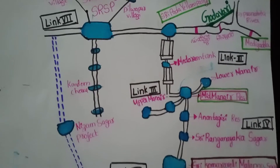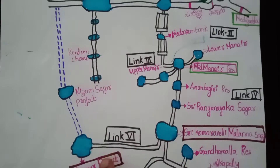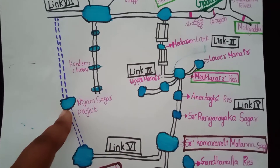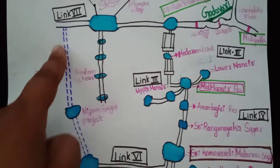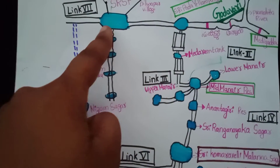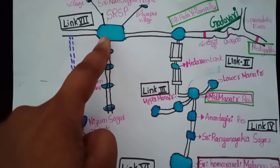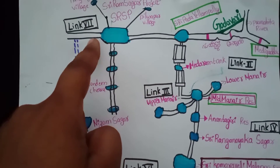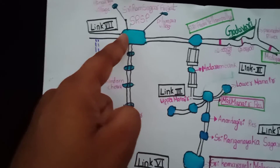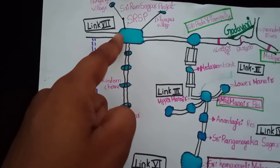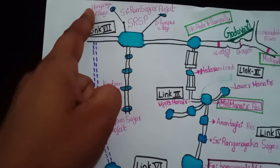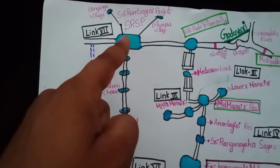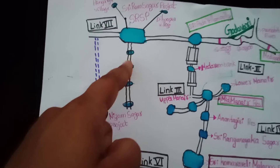Coming to Link 7, this link involves the SRSP (Sriramsagar Project). Work is being done at Hangarga Village and Dilwapur Village, including a small reservoir as part of this link.